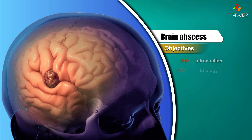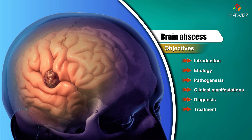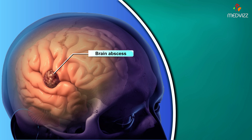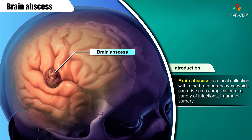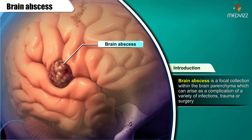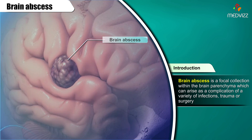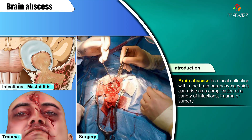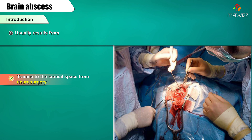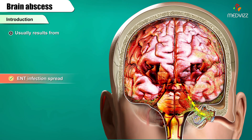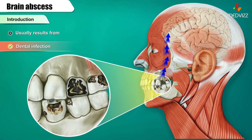Brain abscess. Introduction: Brain abscess is a focal collection within the brain parenchyma which can arise as a complication of a variety of infections, trauma or surgery. It usually results from trauma to the cranial space, such as from neurosurgery, ENT infection spread, or dental infection.